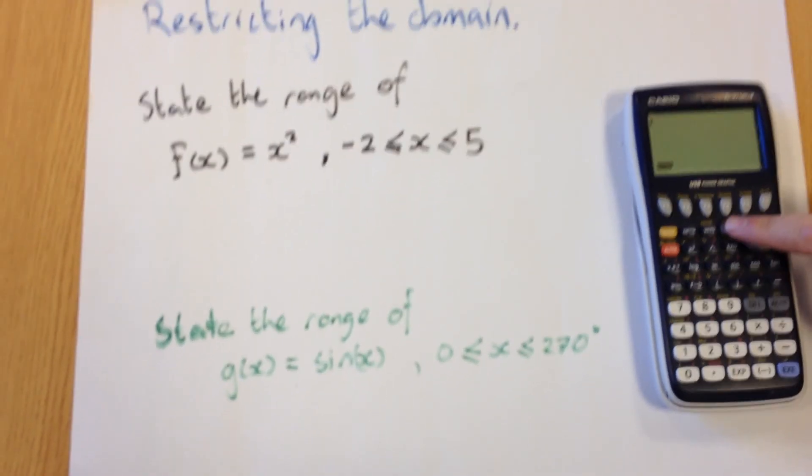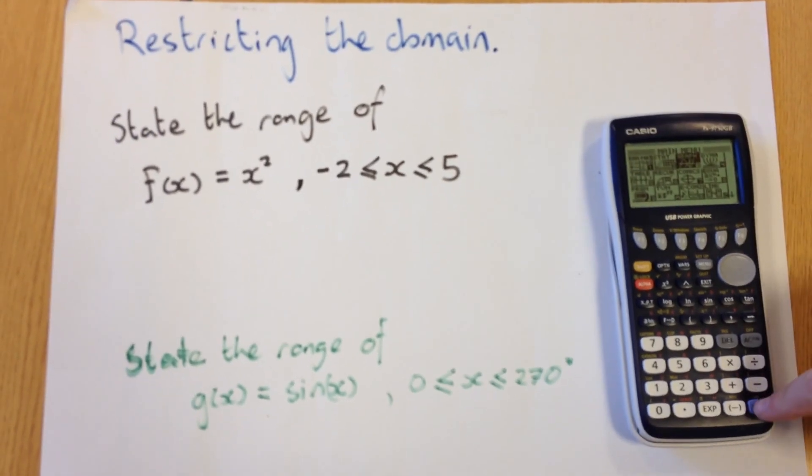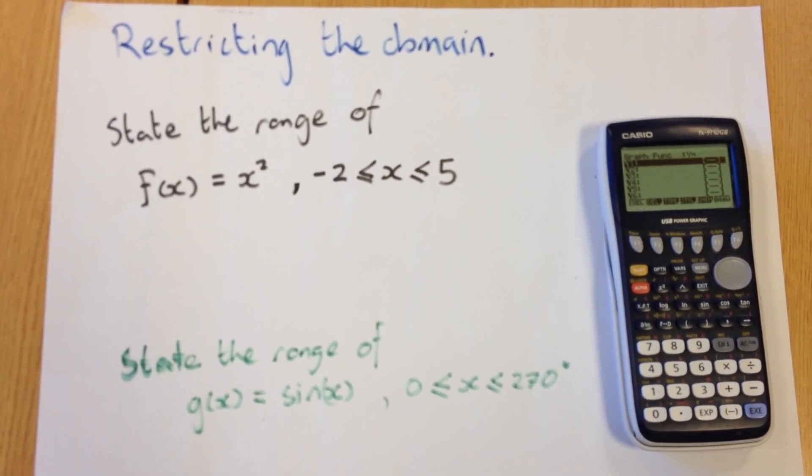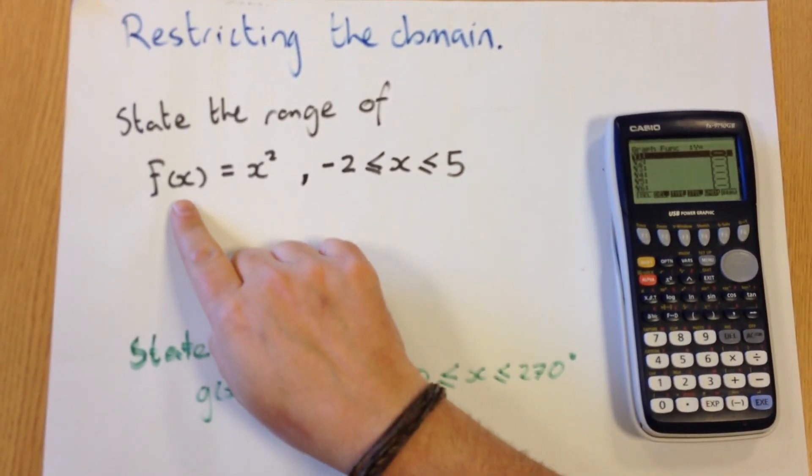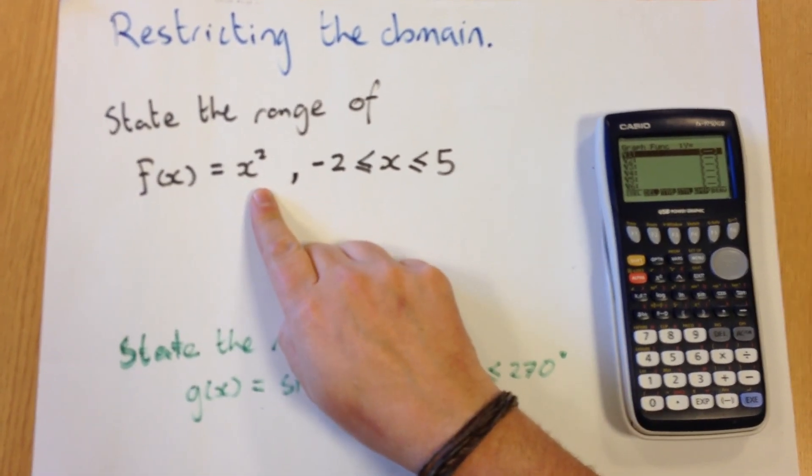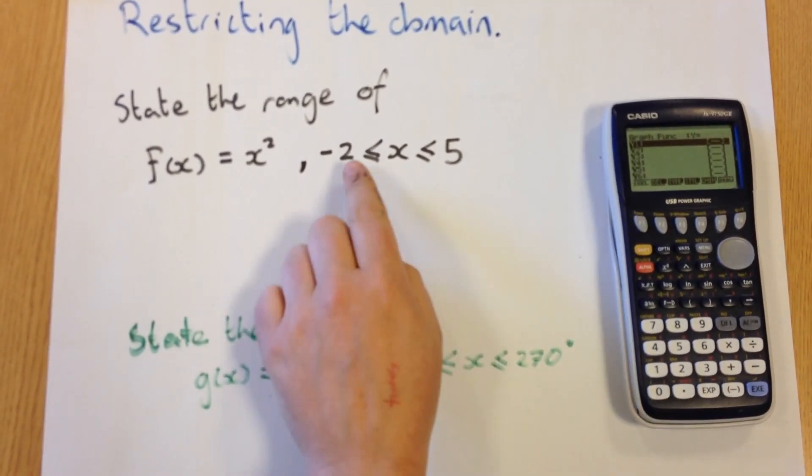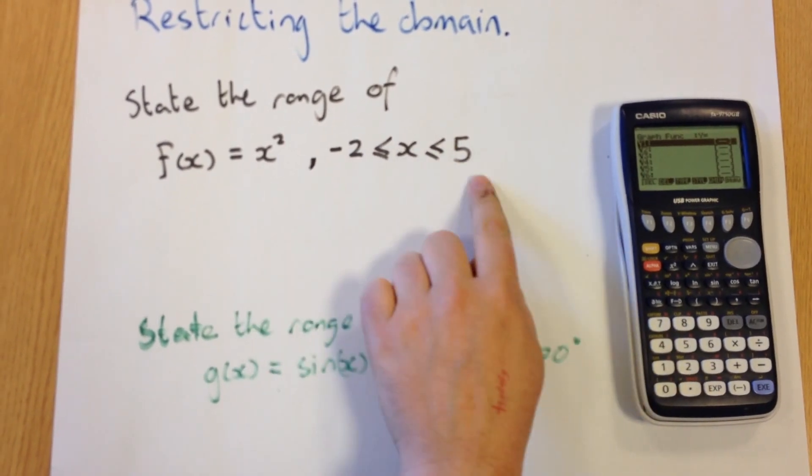So how we're going to do it is we're going to go to menu and go to the graph mode, and what we're going to do is we're going to sketch our graph of y equals x squared. And then the additional bit, the bit that's a bit unusual, is we're going to restrict the domain from minus 2 to 5.